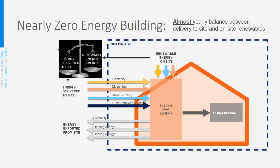Let's move on to nearly zero energy buildings. Be aware that the abbreviation is also NZEB — the same as for net zero energy buildings, which is very confusing. In these buildings, a small deviation from the yearly balance is accepted, meaning that producing slightly less renewable energy on-site than needed to balance the energy delivered is allowed. How large this deviation is depends on national and local agreements. For instance, European guidelines indicate a maximum imbalance of 45 kWh per square meter. Just as with net zero energy buildings, many different definitions can be found.